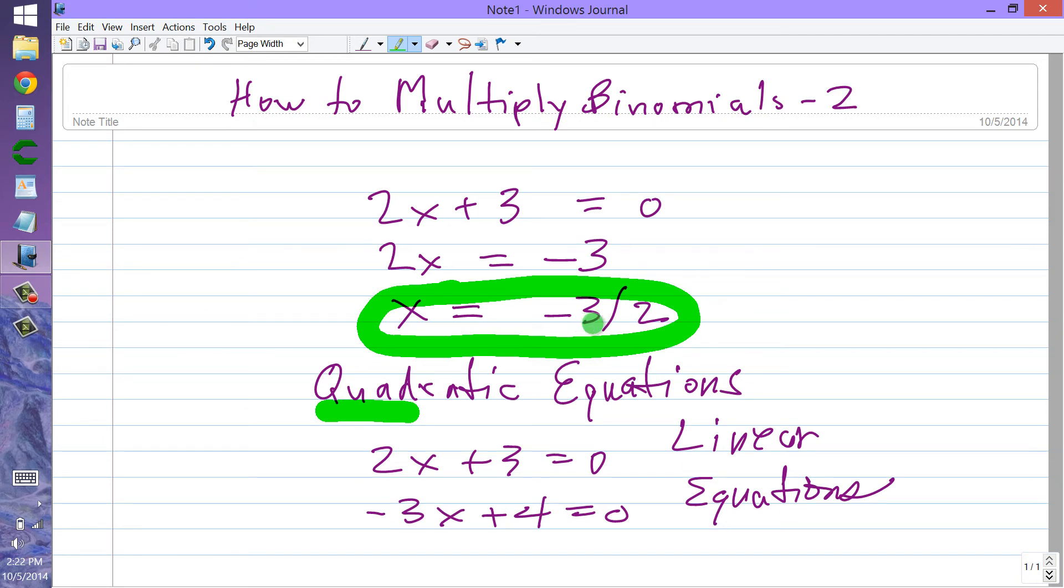If you plug minus 3 halves into that original equation, which I have now forgotten, but you can go back earlier in the video and see it. If you plug x equals minus 3 over 2 into that, you will get zero for the whole equation. Because one of the two factors equals zero and anything times zero equals zero.